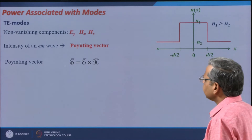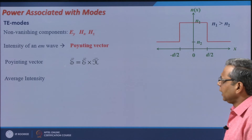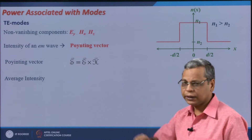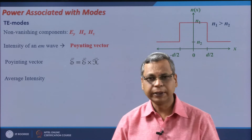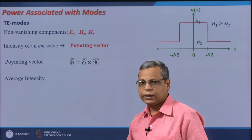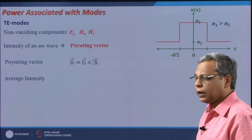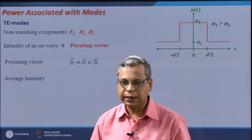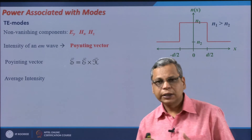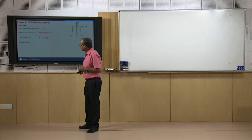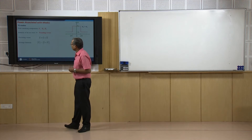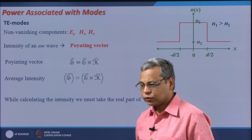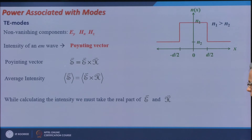The Poynting vector is given by S = E × H. Since we are talking about electromagnetic waves in the optical frequency range, E is fluctuating with a frequency of something like 10¹⁵ Hz, and so is the magnetic field. Therefore S is also fluctuating at a very rapid rate. Any detector, even a very fast one, cannot record such rapid fluctuations, nor can our eye. So what we record is basically the time-averaged value. We will find out the average intensity by taking the time average of E × H, and since intensity is a real quantity, we must take the real parts of E and H.